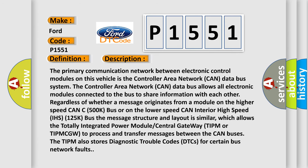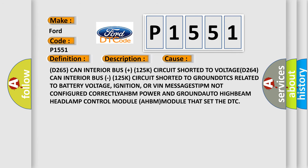This diagnostic error occurs most often in these cases: D265 CAN interior bus plus 125K circuit shorted to voltage; D264 CAN interior bus 125K circuit shorted to ground; DTCs related to battery voltage, ignition, or VIN messages; TIPM not configured correctly; AHBM power and ground; auto high-beam headlamp control module (AHBM) that set the DTC.